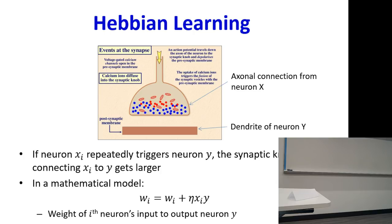You have this neuron connected to this guy through this dendrite. Every time this guy fires and causes this to fire successfully, the connection is going to get bigger. 'Neurons that fire together wire together' — that was the famous statement he made. He actually came up with a mathematical model for this: let W be the strength of the connection between these two. Anytime these two fire together, X and Y are both going to be one, and so this weight is going to increase a little because eta is always positive.